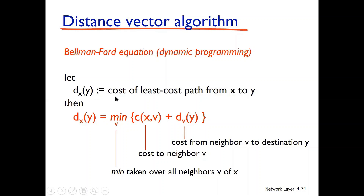Dxy is the cost of the least cost path from source node x to y. The Bellman-Ford equation gives us: Dxy = min over v of (cxv plus dvy). This means direct link cost to neighbor node v, plus the path cost from that neighbor node v.